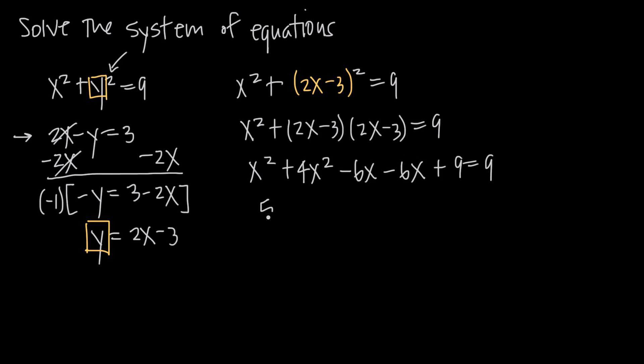Now when we collect like terms, we get x squared plus 4x squared is 5x squared. Negative 6x minus 6x is a negative 12x. And then we can go ahead and subtract 9 from both sides because when we do that, we'll get the 9's over here to cancel. And over here on the right, we'll get 9 plus a negative 9 or 9 minus 9 is 0 on the right hand side. So we just end up with 5x squared minus 12x is equal to 0.